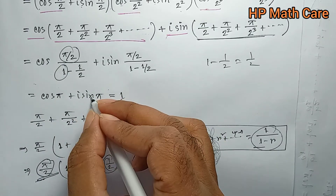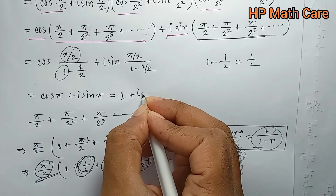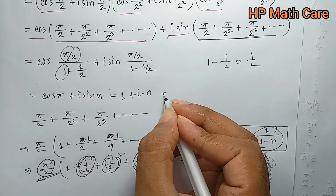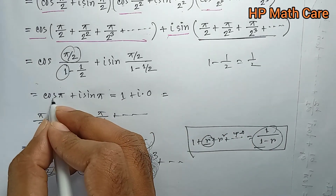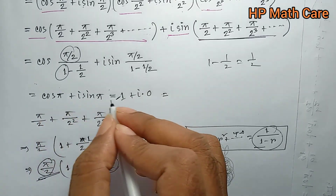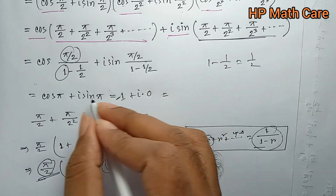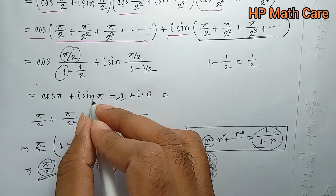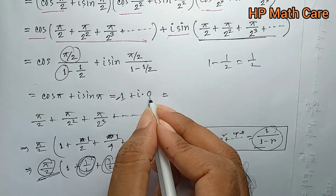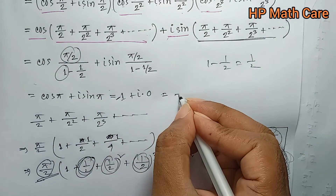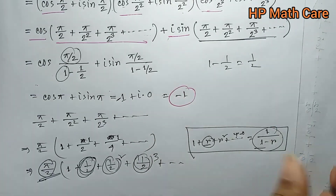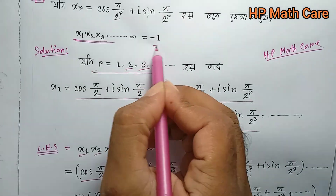Sin(π) equals 0, sin 180 degrees is 0. So the ultimate result is cos(180) plus i sin(180). Cos 180 is minus 1 and sin 180 is 0. The ultimate answer is minus one, which confirms the original equation.